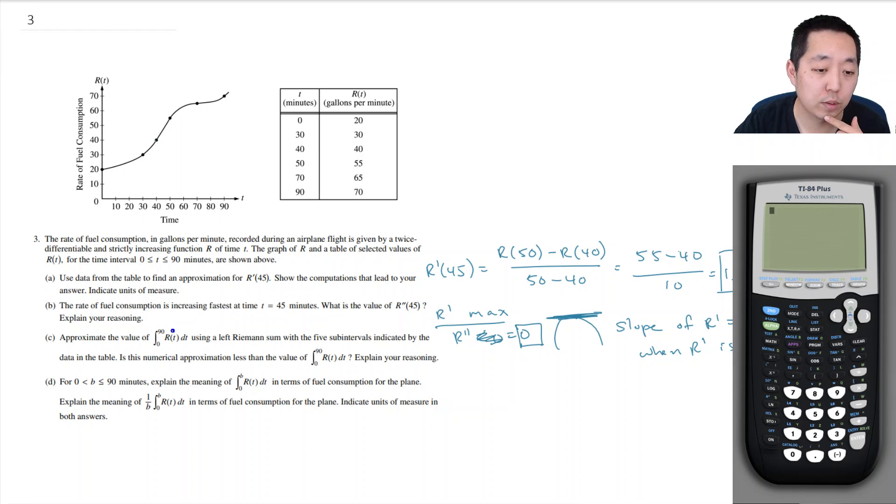Approximate the value of the integral using a left Riemann sum with five sub-intervals indicated in the data table. It's a numerical approximation. So here we're going to do a rectangle, and we're going to use a left sub-interval. They give you a nice graph, you can just draw these rectangles automatically. So we're doing this rectangle, it's clearly an underestimate, right? You can just see from the graph because the graph is increasing.